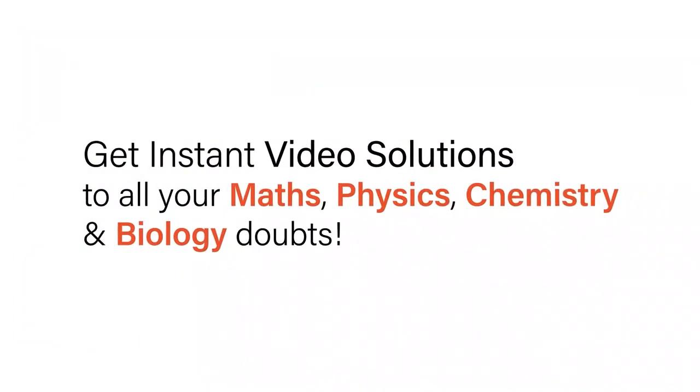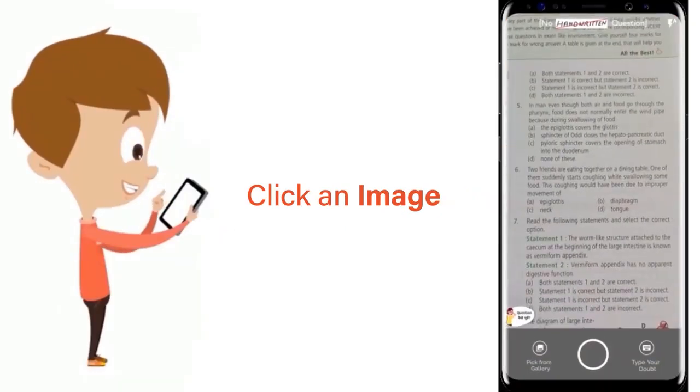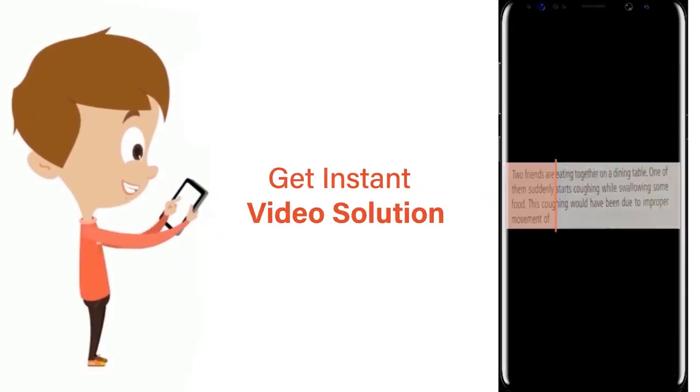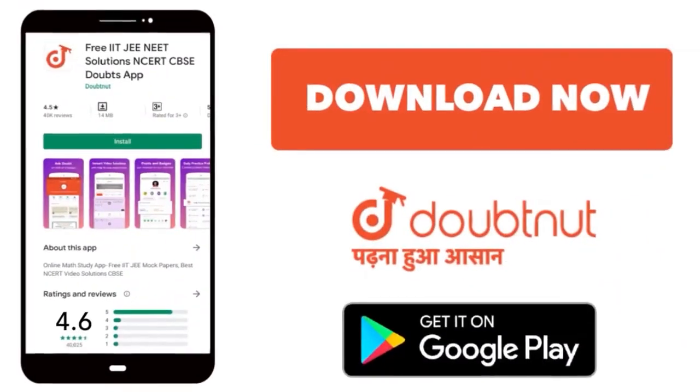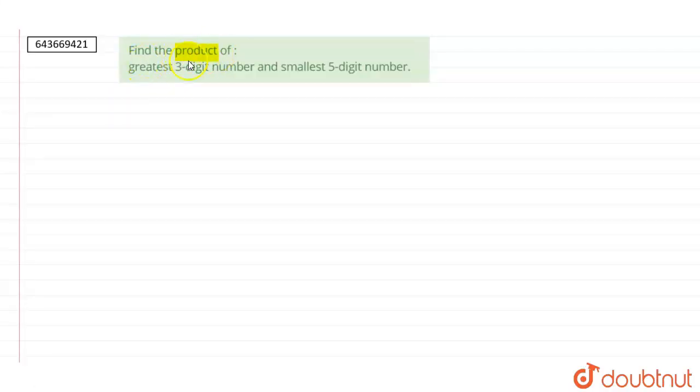With Doubtnet, get instant video solutions to all your maths, physics, chemistry, and biology doubts. Just click the image of the question, crop the question, and get instant video solution. Download Doubtnet app today. The question is: find the product of greatest three digit number and smallest five digit number.